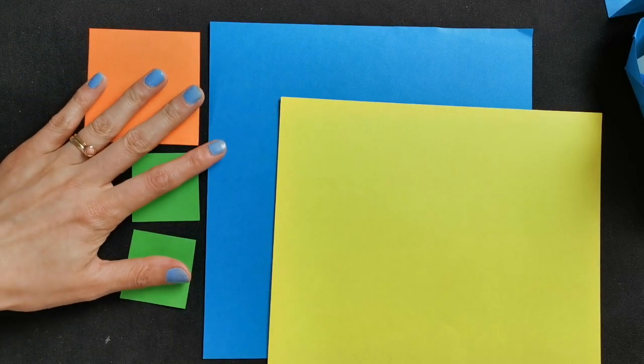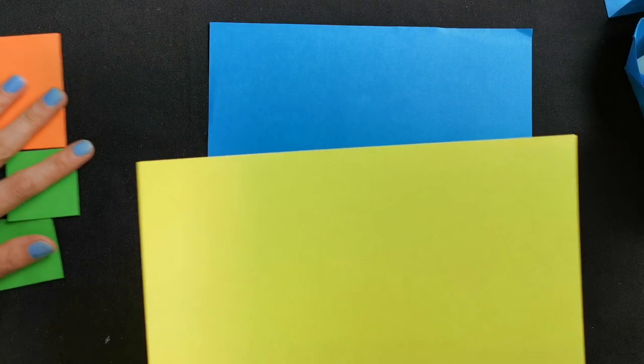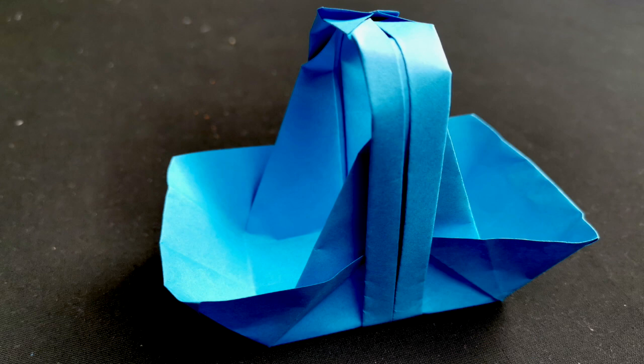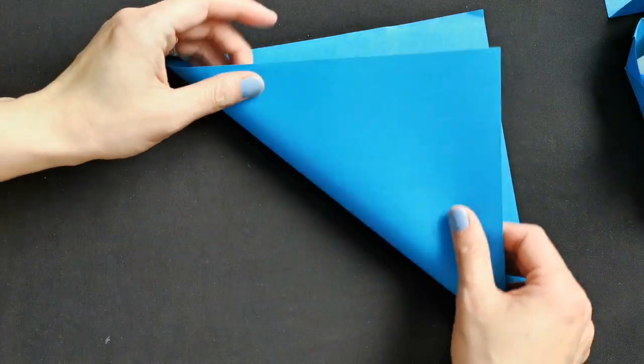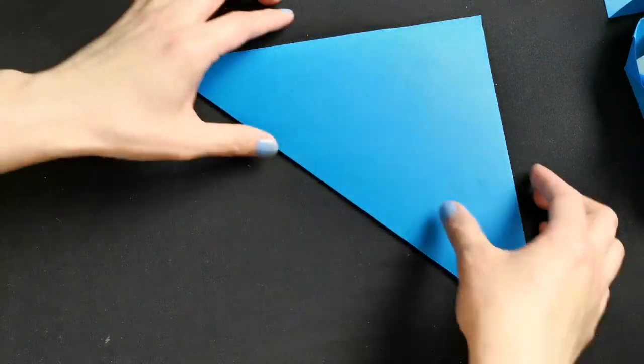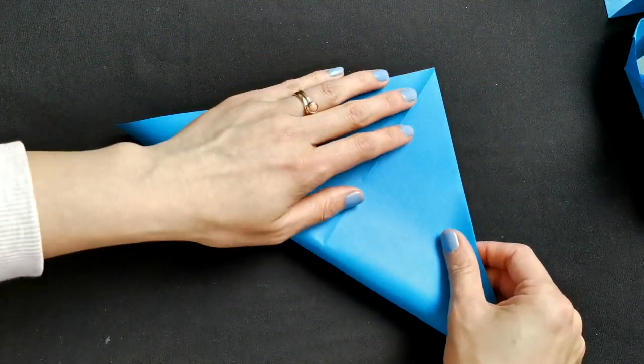Orange and two about two centimeters by two centimeters square green. So going to start with basket, we start folding it into a triangle in half and then turn around, fold in half again.